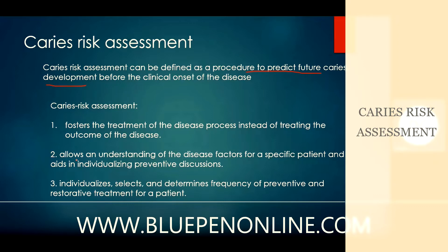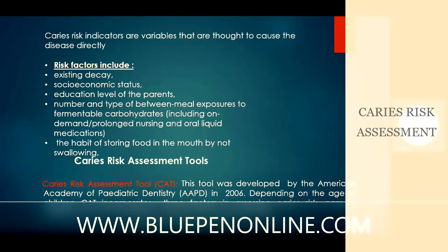There are KDIS risk indicators, which are variables thought to cause a disease directly. These risk factors include existing decay, socio-economic status, education level of the parents, number and type of between-meal exposure to fermentable carbohydrates, and the habit of storing food in the mouth by not swallowing.